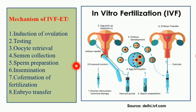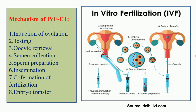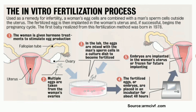In the IVF process: semen is collected from the donor and sperm is prepared for fertilization, followed by insemination and confirmation of fertilization. The sperm and egg are fertilized outside the body, and then the fertilized embryo is transferred into the female body. These are the basic steps of IVF.